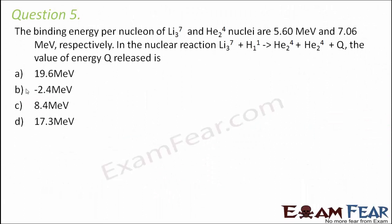Question number 5. The binding energy per nucleon of lithium and helium nuclei are 5.60 MeV and 7.06 MeV respectively. In the nuclear reaction: lithium plus hydrogen gives helium plus helium plus Q, the value of energy Q released is?